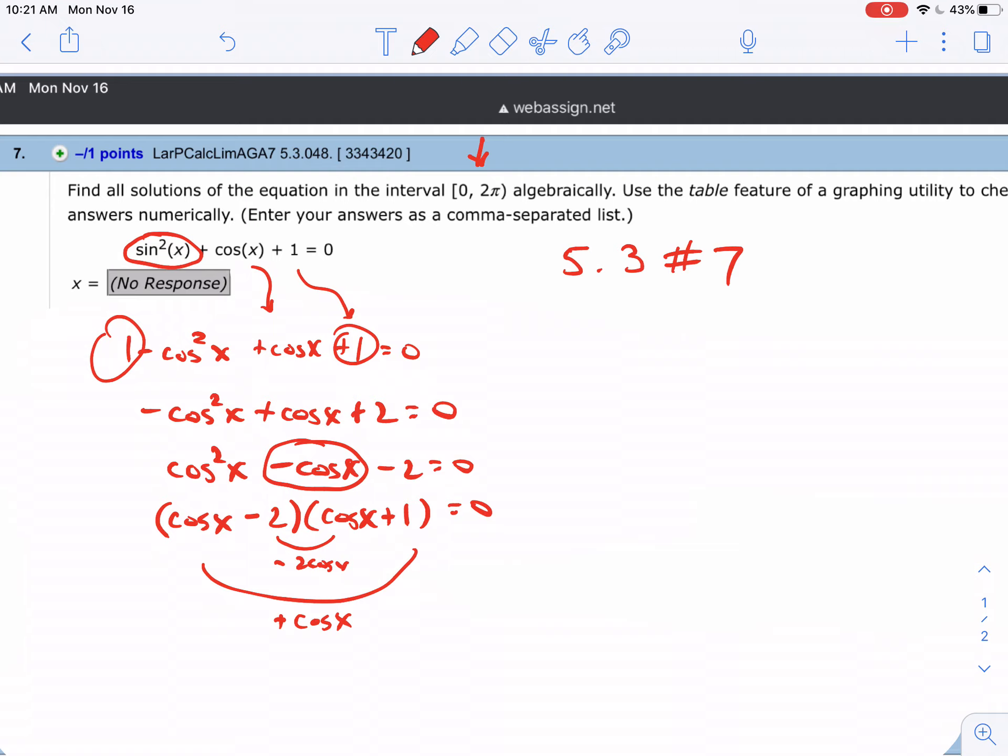Now setting those two things equal to 0, add the 2 to the other side and then the other one, subtract the 1 to the other side. Now here the cosine of x is never 2 on the unit circle, so it's too big. So there are no solutions from this one. And then this one, when you look at when is...